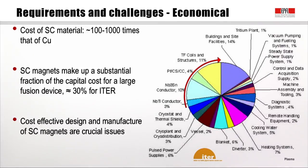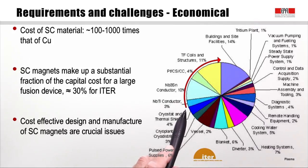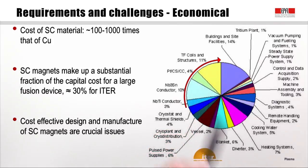Last but not least, there are economic challenges. The cost of materials used for superconducting coils is about 100 to 1000 times that of copper. As a consequence, the superconducting magnets make up a very substantial fraction of the total cost of a large fusion device. For example, in the cost breakdown pie chart from ITER, the conductors for the superconducting magnets — niobium-3-tin, niobium-titanium — and the other elements for the coil structures together amount to about 30% of the capital cost. This means cost-effective design and manufacture for these magnets are absolutely crucial issues.